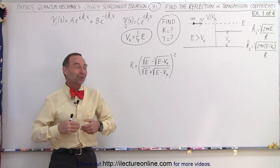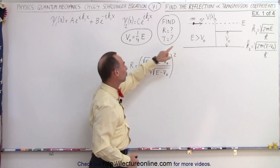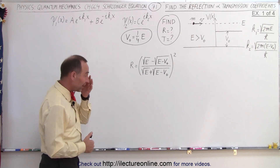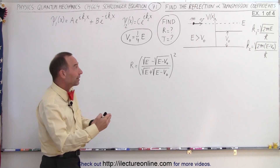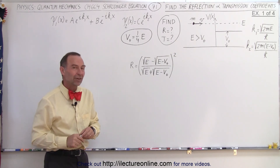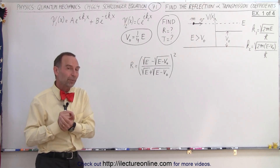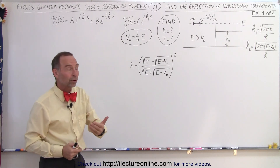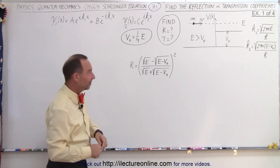Welcome to our lecture online. Here we're going to do our first example where the potential step is one quarter the energy of the particle. So we'd say that a fair number of particles would be reflected and of course a greater number probably transmitted — but that will not be the case. Due to the nature of the equation, it's actually going to be a very small percentage of the particles that will be reflected, even if the potential step is one quarter the energy. So let's work it out and see what it is.